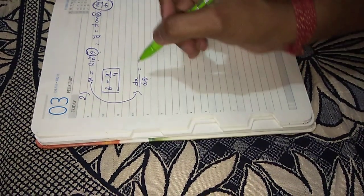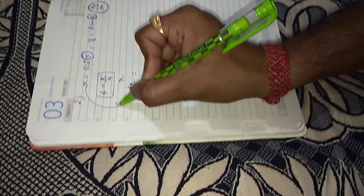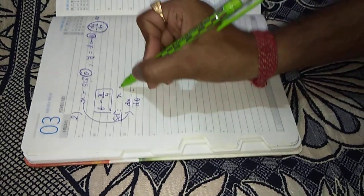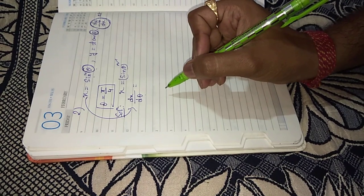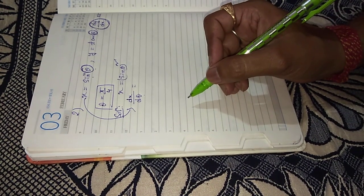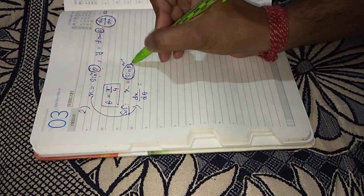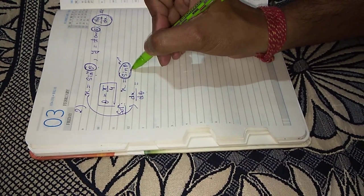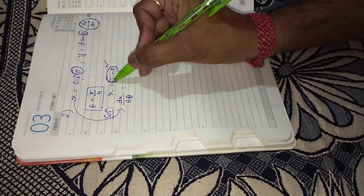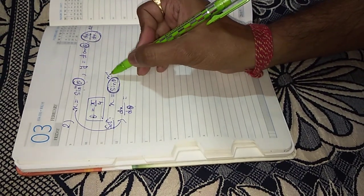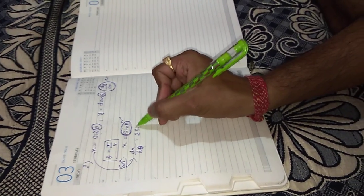So dx by d theta. Since x equals sin square theta, sin square theta can be written as sin theta whole square. We can write sin square theta as sin theta whole square. So apply chain rule. Let us consider this sin theta as u. Differentiation of u square we all know is 2u, that means 2 into sin theta.